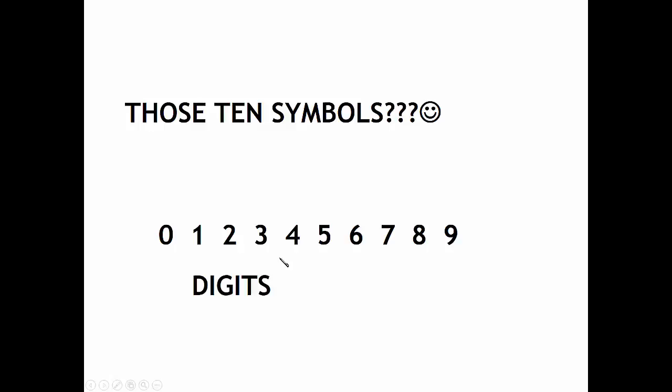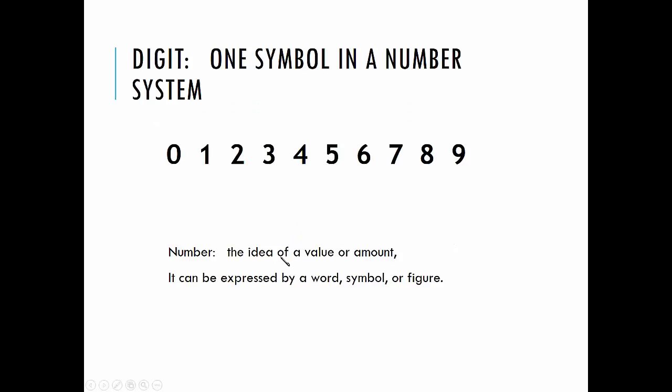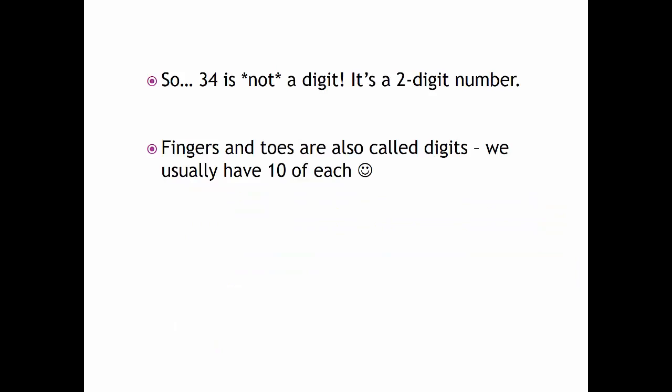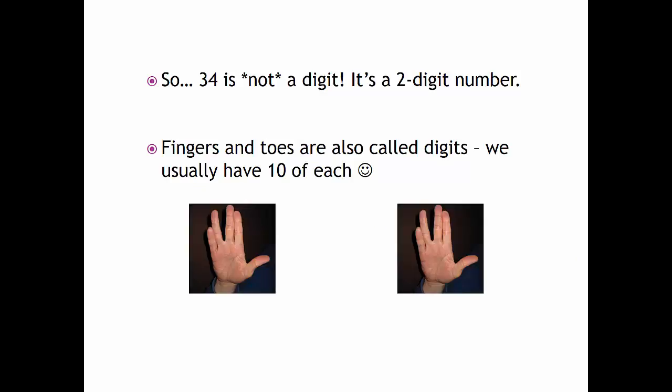A digit is one symbol in a number system. A number is the idea of any value or amount, expressed by a word, a symbol, or a figure. Say 34: the three stands for thirty, the four stands for four. 34 is not a digit—it's a two-digit number. Fingers and toes are also called digits, and we usually have ten of each.